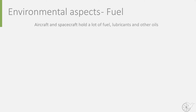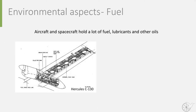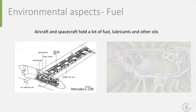Aircraft and spacecraft tend to also hold a lot of fuel, as well as oil and other lubricants in the many systems, such as the landing gear. If an aircraft has an integral fuel tank without an additional fuel bag inside, as is the case here for a Hercules C-130 transport aircraft, all joints and connections are sealed air and liquid tight.